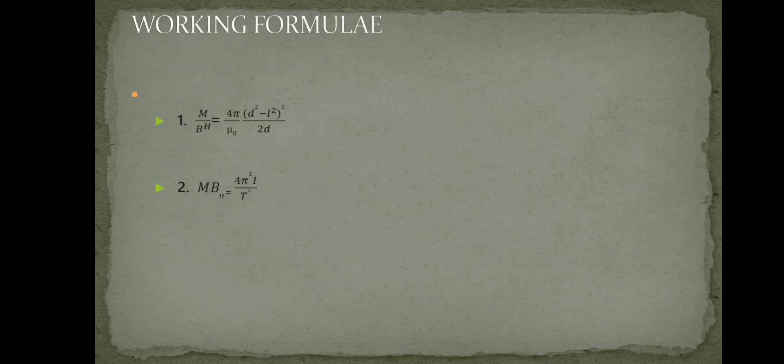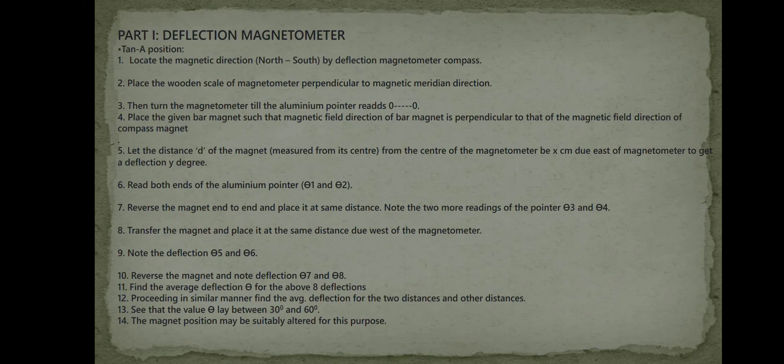Working formula: Deflection magnetometer. Locate the magnetic meridian by the deflection magnetometer compass. Place the wooden scale of the magnetometer perpendicular to the magnetic meridian direction. Then turn the magnetometer till the aluminum pointer reads 0 to 0.